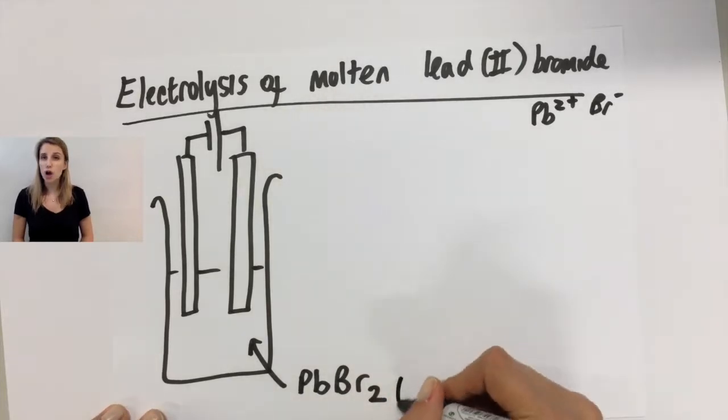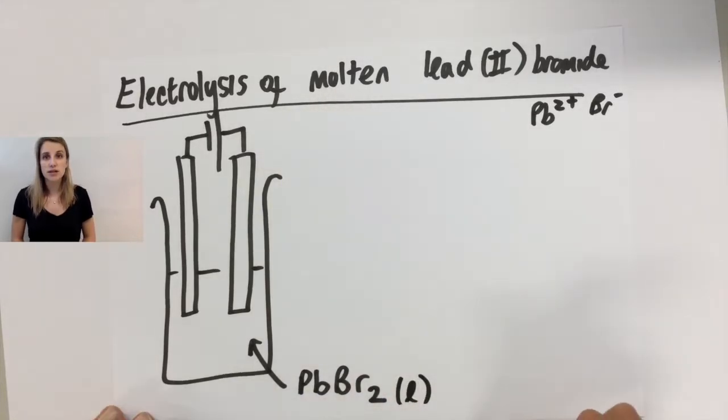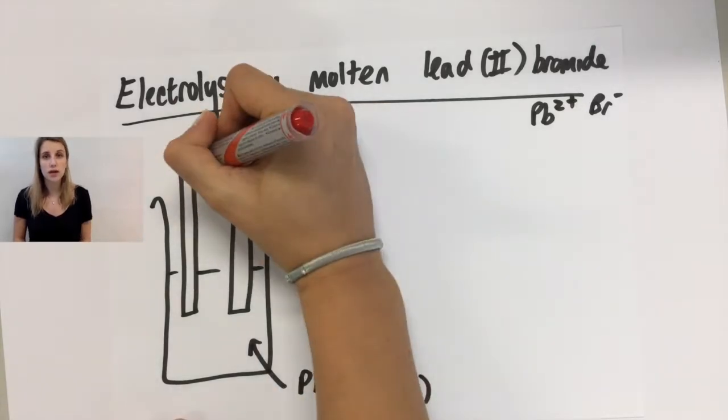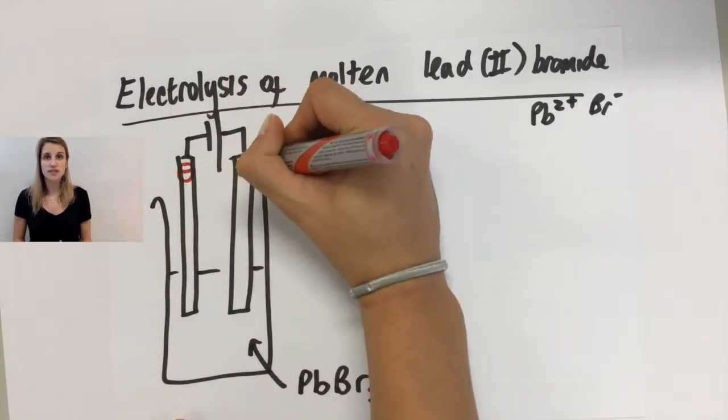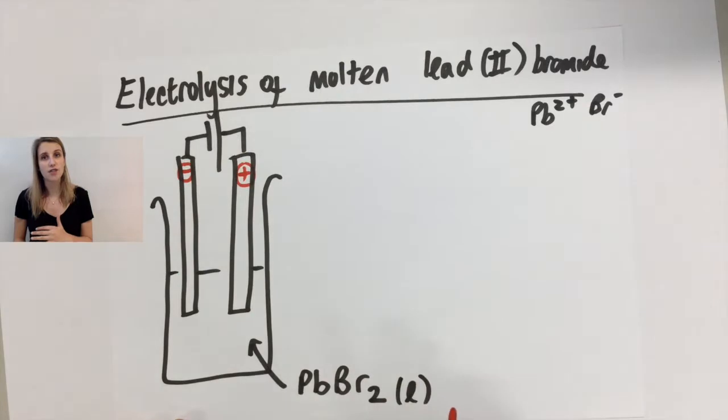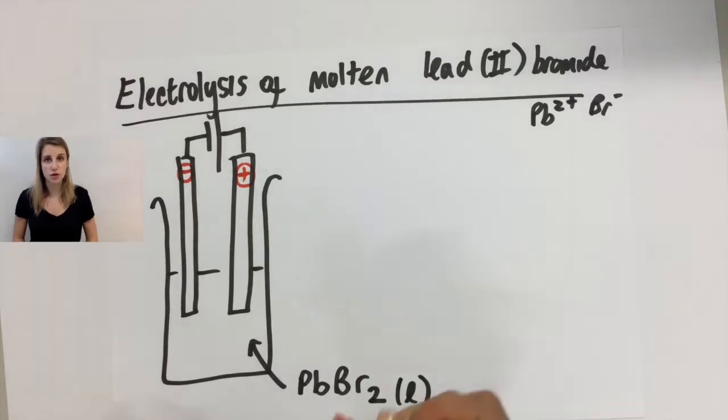I also know that it's a liquid because in the question it says it's the electrolysis of molten lead bromide. So we can add the L state symbol next to the compound. What we can do next is decide which is the anode and the cathode. Don't forget that the smaller side of the battery means it's the negative side, so it's linked to the negative electrode, which is the cathode in this case.